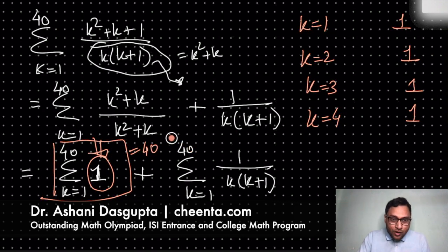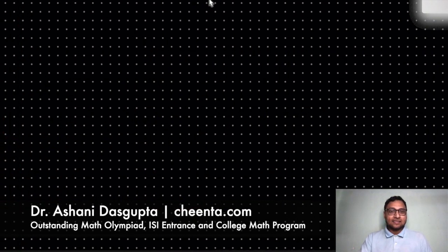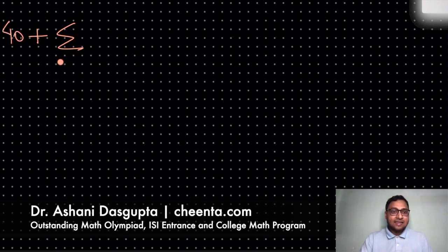So we have to worry about just this particular piece. So we are at the very end of this problem. Let's go ahead and finish this off. This is 40 plus k equals 1 to 40, 1 over k times (k+1).